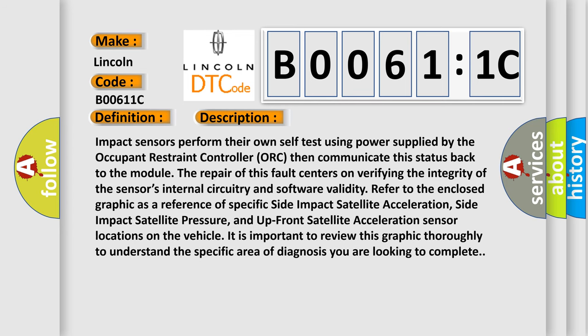Impact sensors perform their own self-test using power supplied by the occupant restraint controller and communicate this status back to the module. The repair of this fault centers on verifying the integrity of the sensor's internal circuitry and software validity. Refer to the enclosed graphic as a reference of specific side impact satellite acceleration, side impact satellite pressure sensor, and upfront satellite acceleration sensor locations on the vehicle. It is important to review this graphic thoroughly to understand the specific area of diagnosis you are looking to complete.